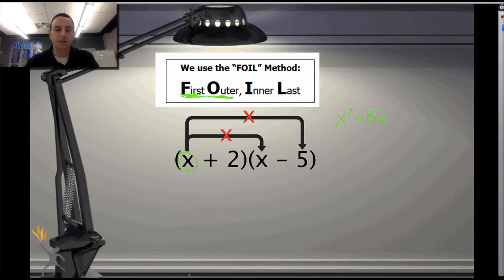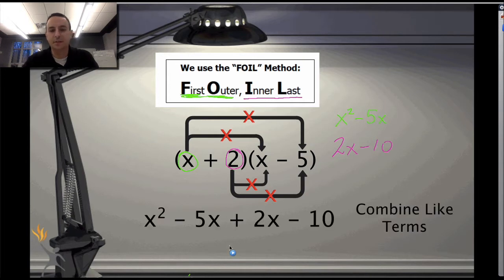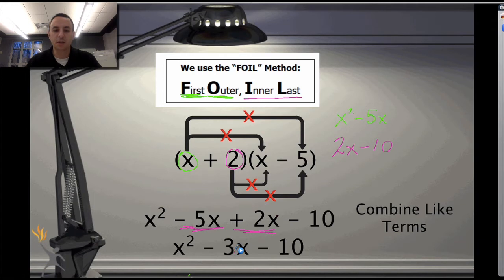The second piece of FOIL is to take the inner number — this one right here — and distribute it to both of the other two numbers. So it'd be 2 times x and then negative 10. Putting them all together: x squared minus 5x plus 2x minus 10. We then combine like terms: negative 5x and positive 2x combine to give a final answer of x squared minus 3x minus 10.